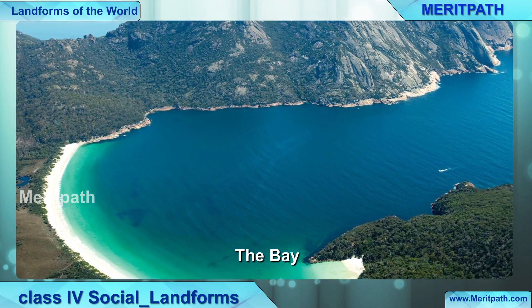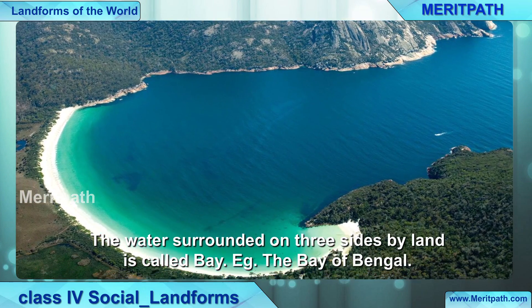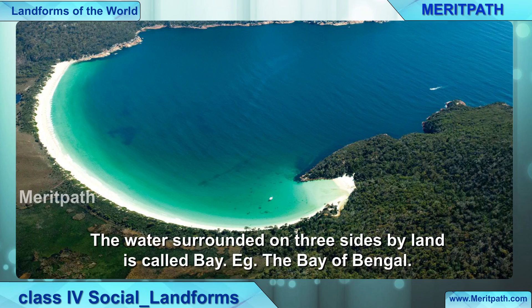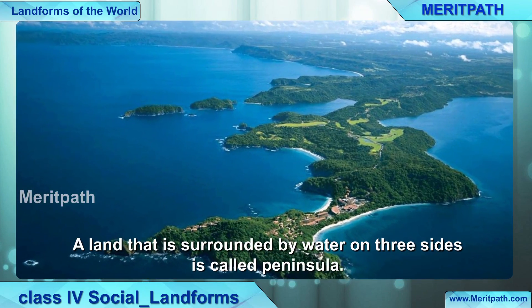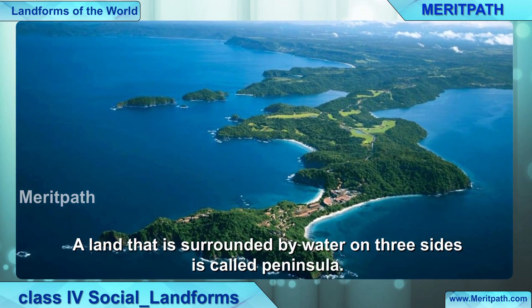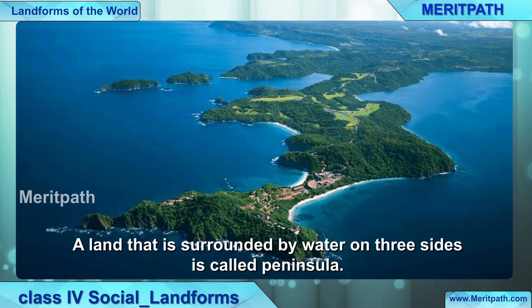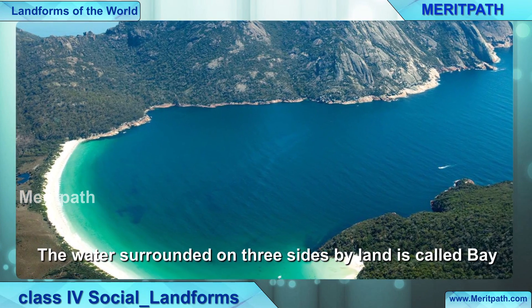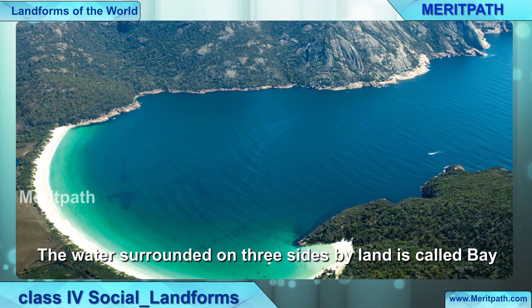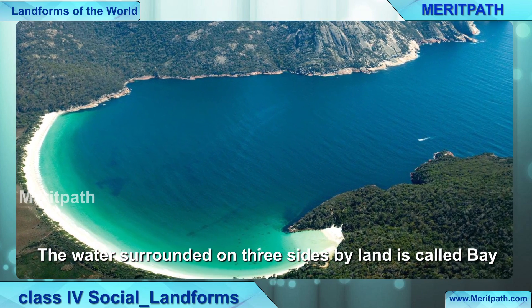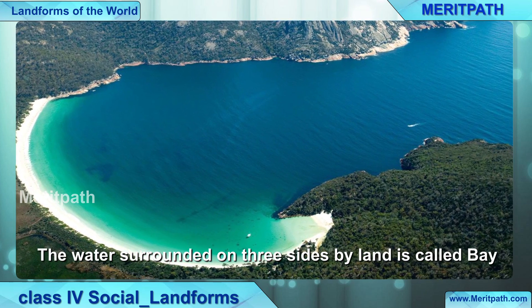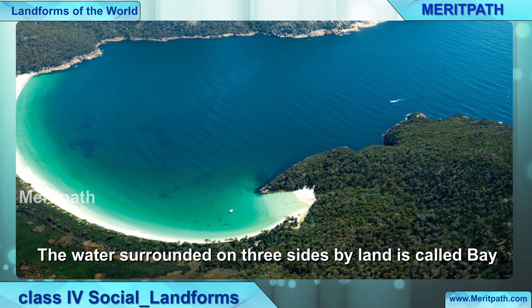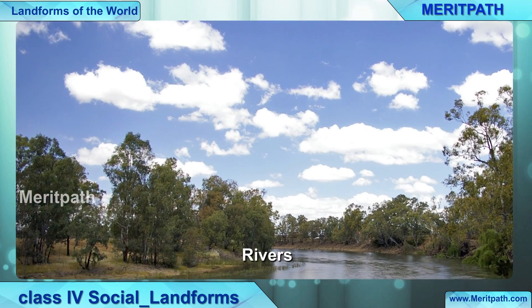Now we are going to learn about the bay. What is a bay? The water surrounded on three sides by land is called a bay. Peninsula is the opposite of the bay — in a peninsula, the land was surrounded by the sea on three sides, whereas in a bay, the sea is surrounded by the land on three sides. This is called a bay.